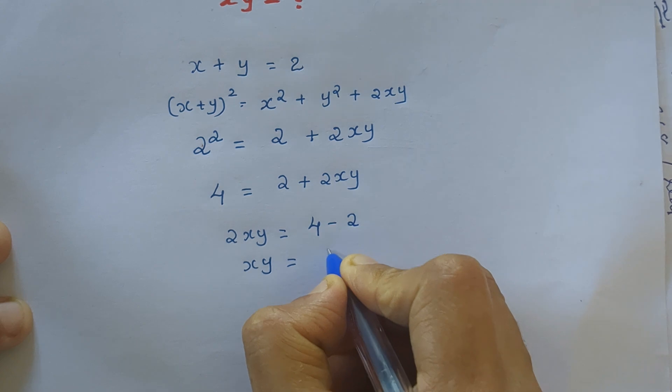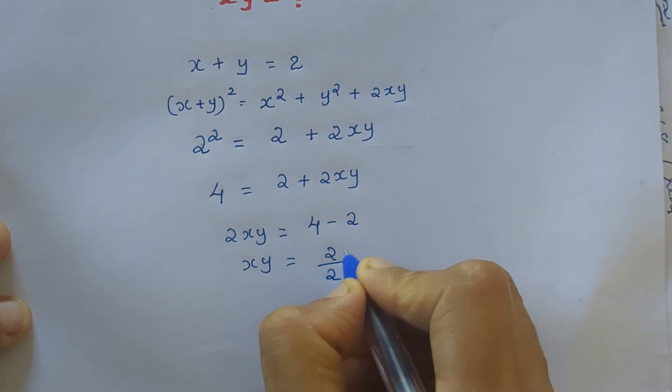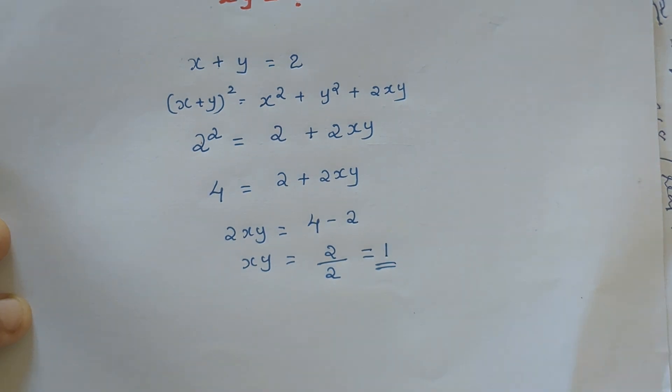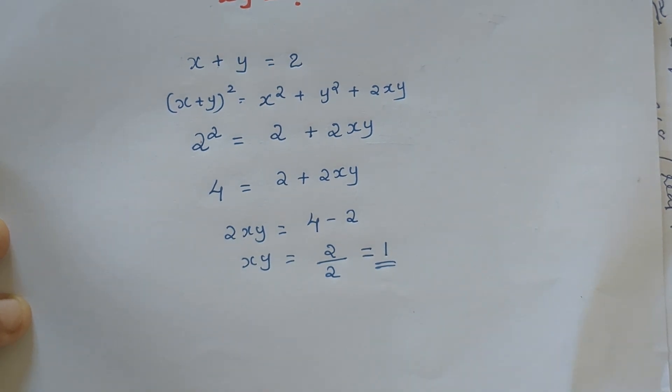xy equal to 2 divided by 2 which is equal to 1. So I have solved this question with very few steps and please subscribe to my channel and support me. Thank you.